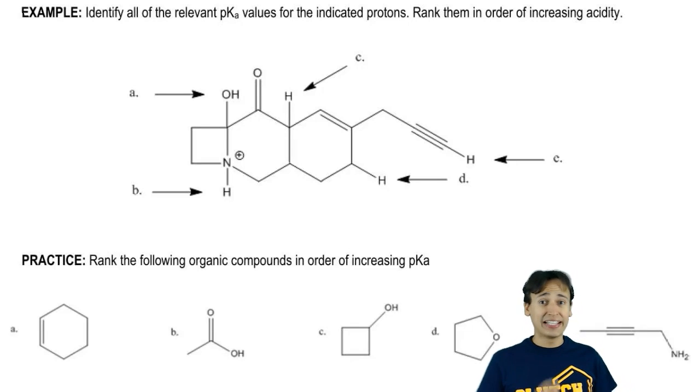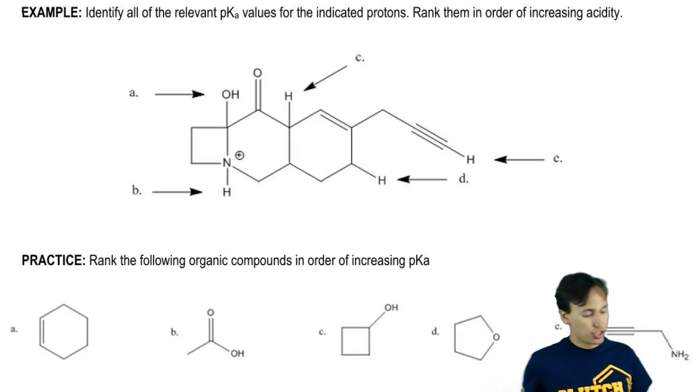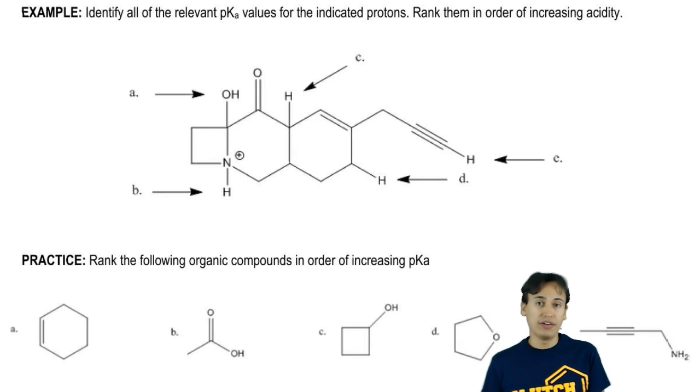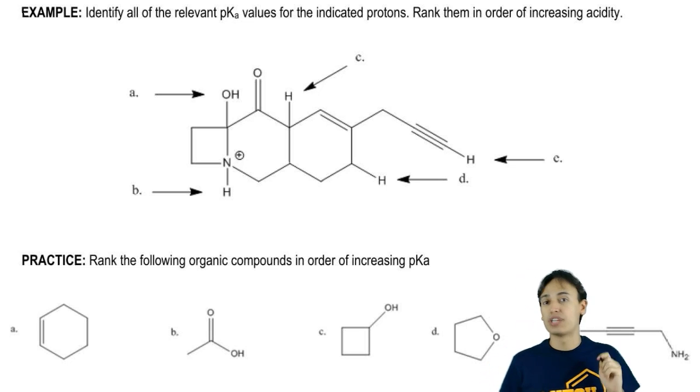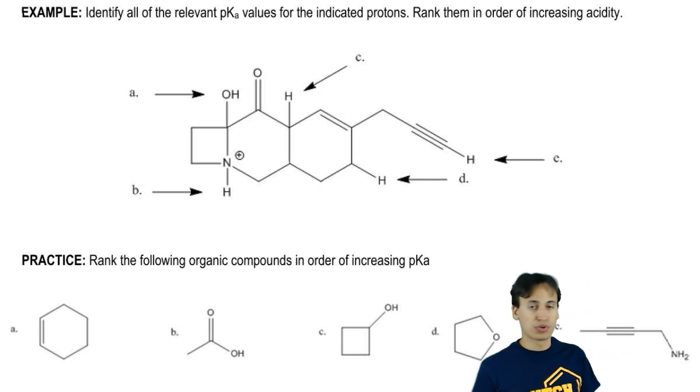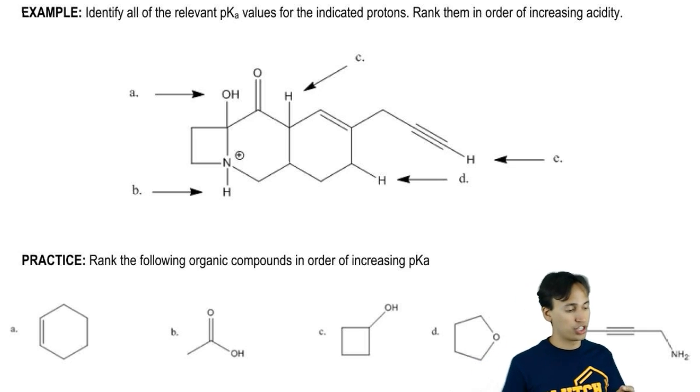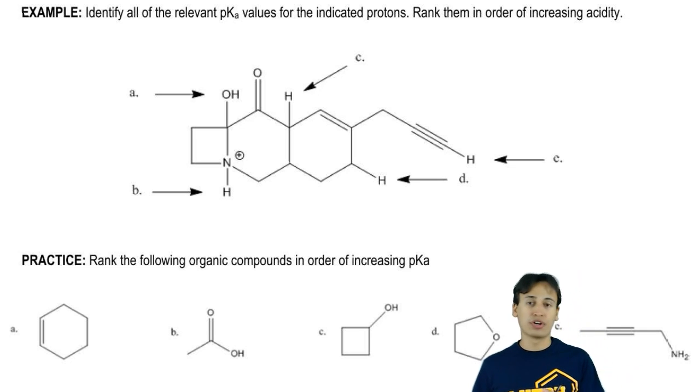Alright guys, let's get into the answer. Again, I'm hoping that you tried this on your own because it's great practice. What we're going to do is go one letter at a time and just say what all the pKa's are of those atoms. Then we're going to follow the rest of the directions in the question which are to rank them in order of increasing acidity, meaning that we start off with the worst acid.